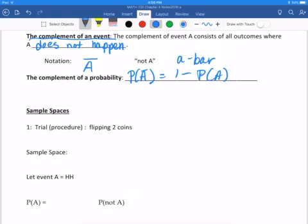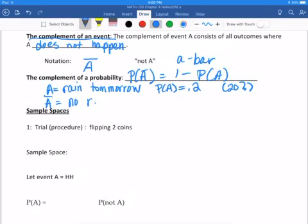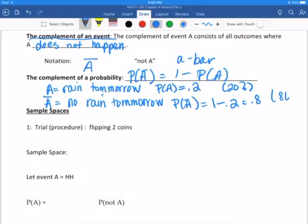So here's one way to think of it. Let's say that you knew event A was it raining tomorrow. And let's say you just happened to know that P of A was 0.2, or that would be the same as saying 20% chance of rain. Now, A bar would mean no rain tomorrow, a nice sunny day. So if you know the probability of rain is 20%, the probability of it not raining would be 1 minus 0.2, which would be 0.8 or 80%.